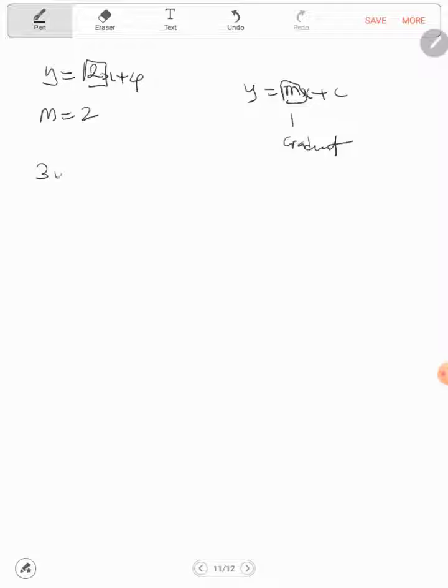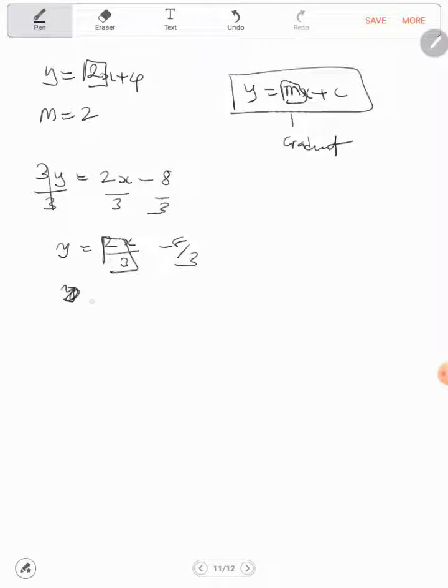But if you have 2y equal to 2x minus 8, how can you find the gradient? Remember, it has to be in this standard form. You need to have y alone on the left side. So divide both sides by 3. We're going to have y is equal to 2x by 3 minus 8 by 3. So all what we need is this part. So gradient is equal to 2 over 3.